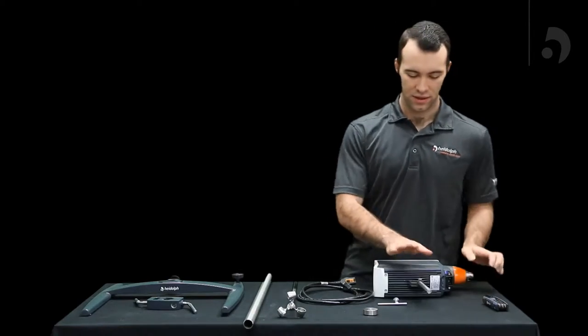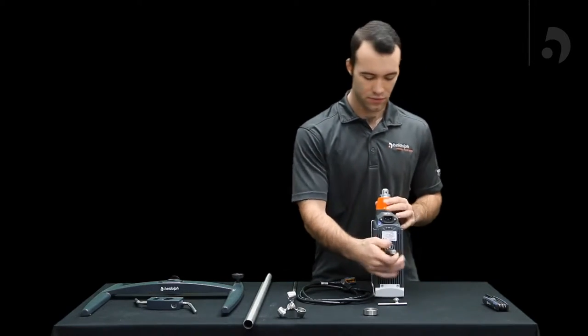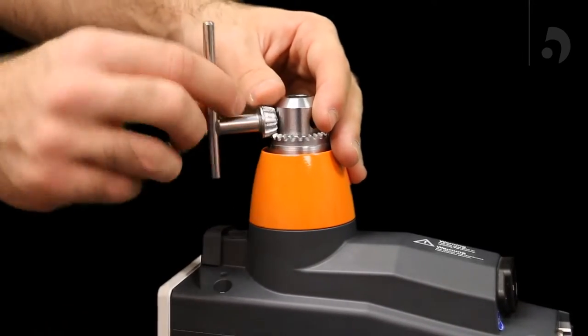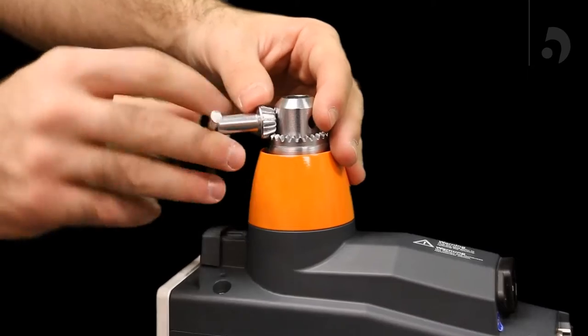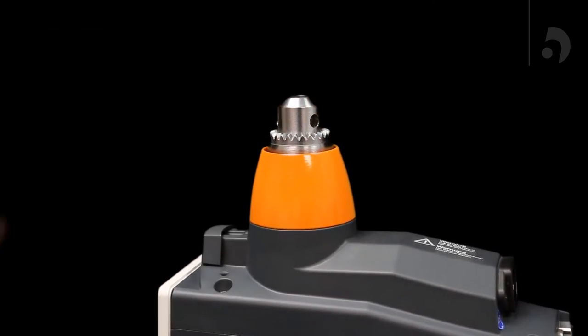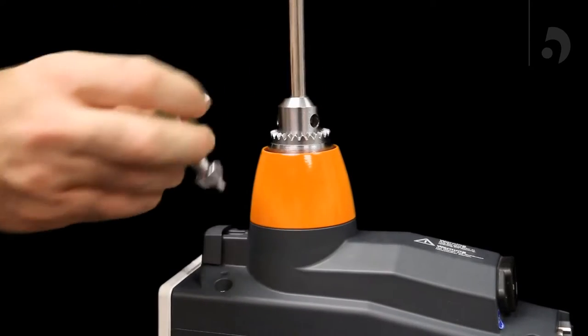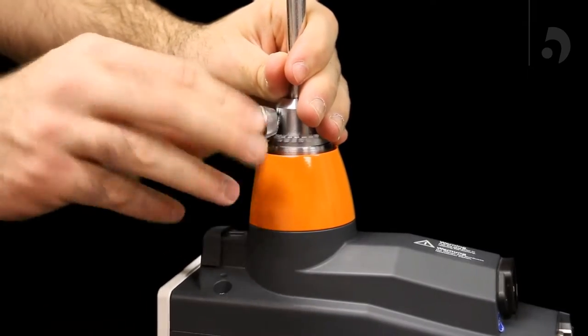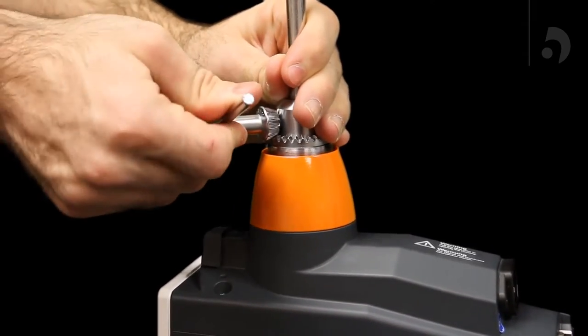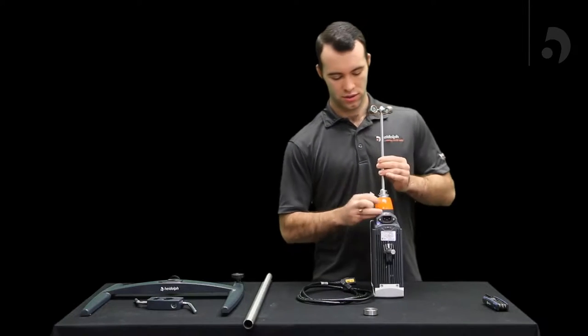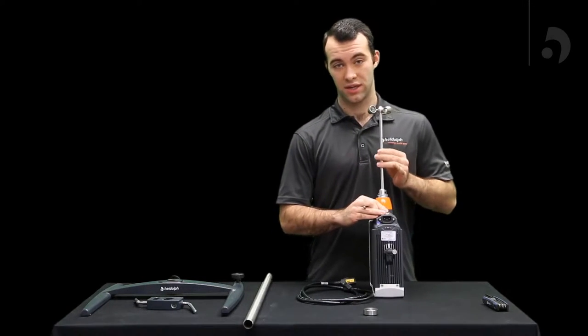Then once you have the support rod in tight, you flip it over using your chunk key, loosen up what will be holding your impeller, and then insert it in to about the appropriate height you desire and again using the chunk key tighten it. Make sure it's in there very snug so when it's rotating it doesn't get loose.